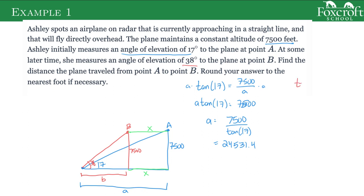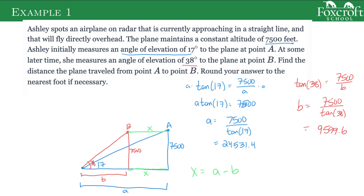For b, it's the same thing. I'm going to have tangent of 38 is opposite over adjacent. Solve this in the same way: b is going to be 7,500 divided by tangent of 38, which is 9,599.6. Our final answer x is when we take that big distance a — which is pretty much how far the plane was at the start — minus b, which is how far away the plane is now, and if you subtract those two it's how far the plane's moved. I get 14,932. It says to round to the nearest foot, so the whole number — my calculator is actually saying 31.8, but that 0.8 rounds it up to 2 — so 14,932 feet is how far the plane has moved.